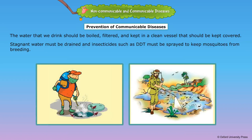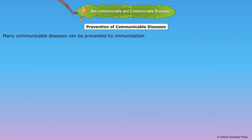Stagnant water must be drained. An insecticide such as DDT must be sprayed to keep mosquitoes from breeding. Many communicable diseases can be prevented by immunization.